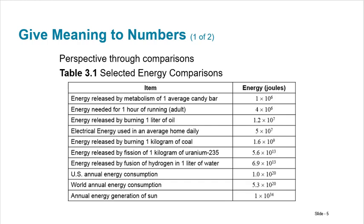So some energy comparisons. Energy released by metabolism of one average candy bar is 1×10^6 joules. Joules are really small. Energy needed for one hour of running, well, four times as much. 4×10^6. Energy released by burning one liter of oil, 1.2×10^7. So 10 times as much as the candy bar. Because it's basically 1 to 1.2, but we go from 10^6 to 10^7 so that's 10 times as big. So these order of magnitudes or these powers of 10 tell you on what order of magnitude we are. How much bigger something is.